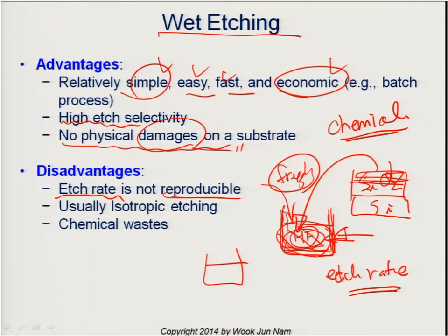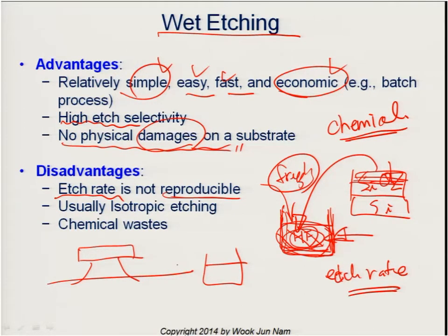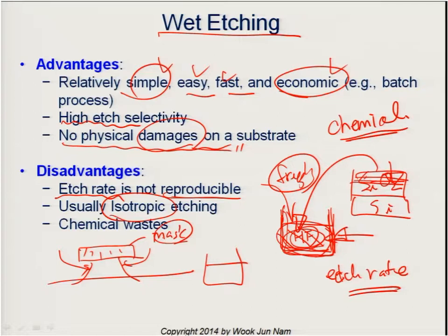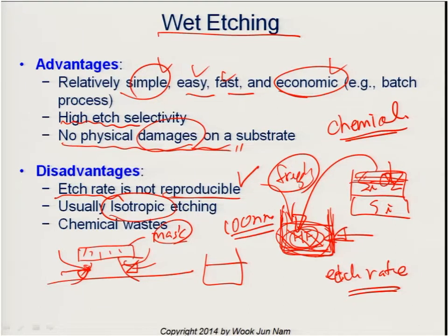Another big problem with wet etching is that in most cases it is isotropic, so it has a pretty big undercut under your mask structure. If you want to use wet etching for nano feature sizes like 100 nanometers, it is not reproducible and it has an undercut, so it is not a reliable method for making nanoscale structures. Also, wet etching produces a lot of chemical waste.